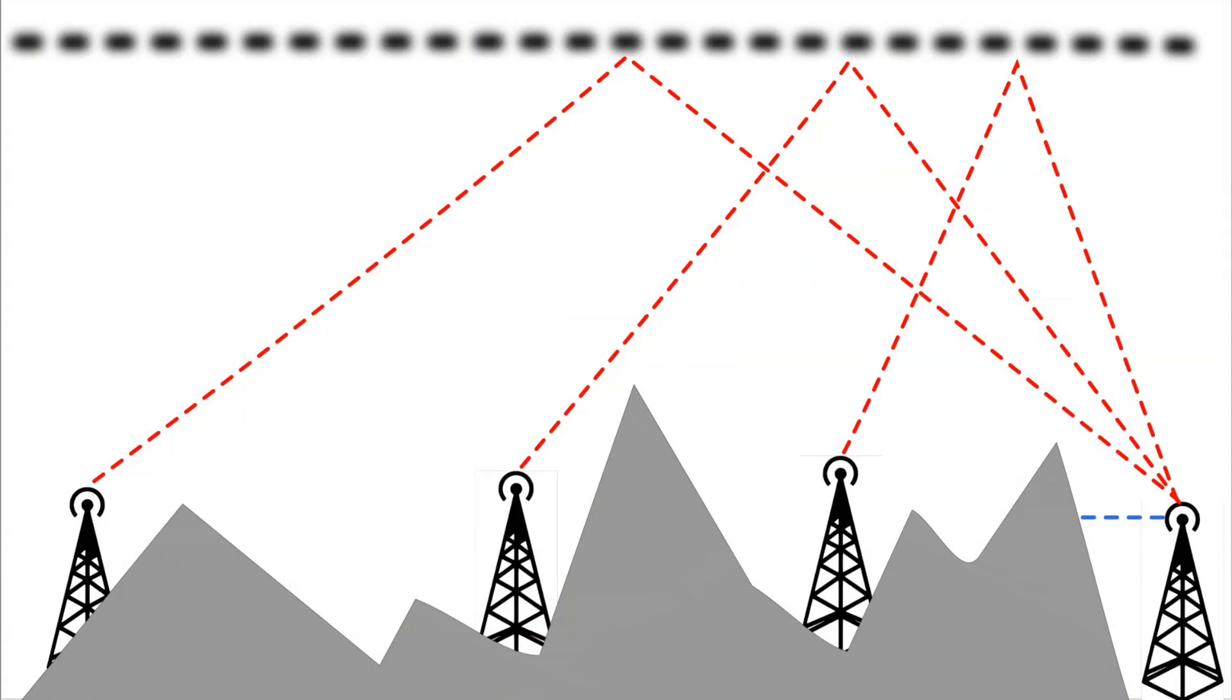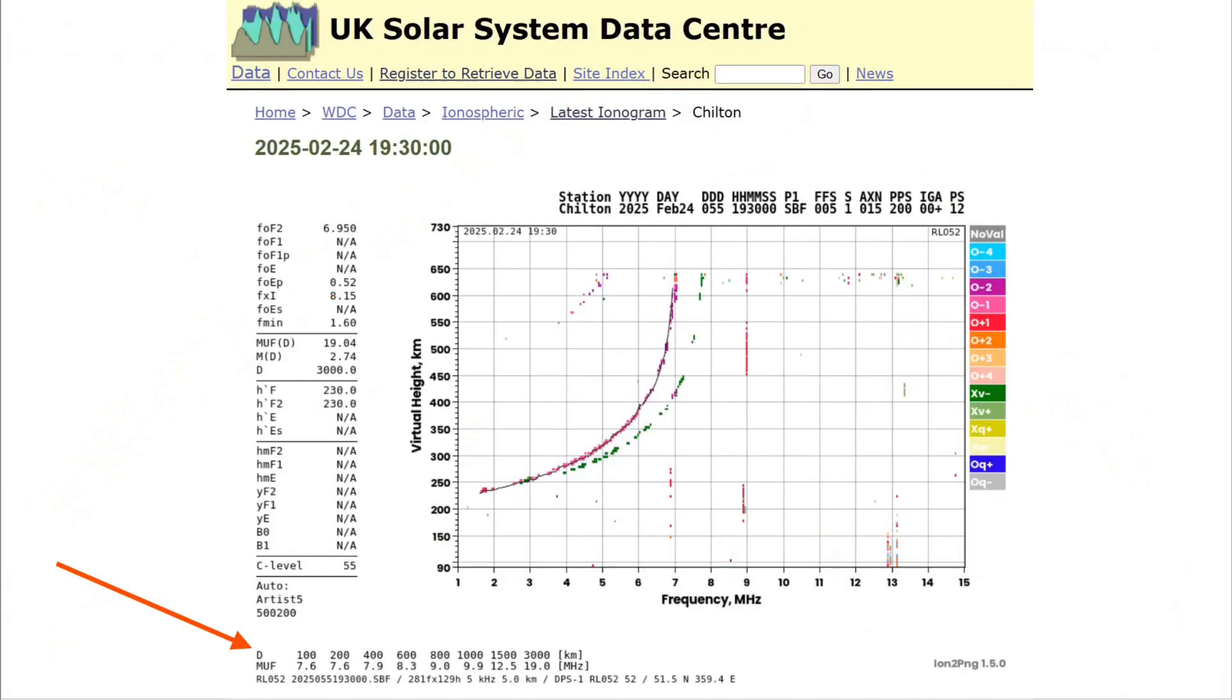This chart shows the basic idea of NVIS. You have a transmitter over here, maybe it's at the bottom of a valley, and it transmits up to the ionosphere, and it comes back down. It's not quite vertical, but near vertical. Near vertical incidence just means the angle that it strikes the ionosphere. And it can come down to this station, also in a valley, if need be. Could be anywhere along in here. And it gets about out to here, and then it peters out after that. You don't get much. So let's take a look at how we can find what frequencies to use.